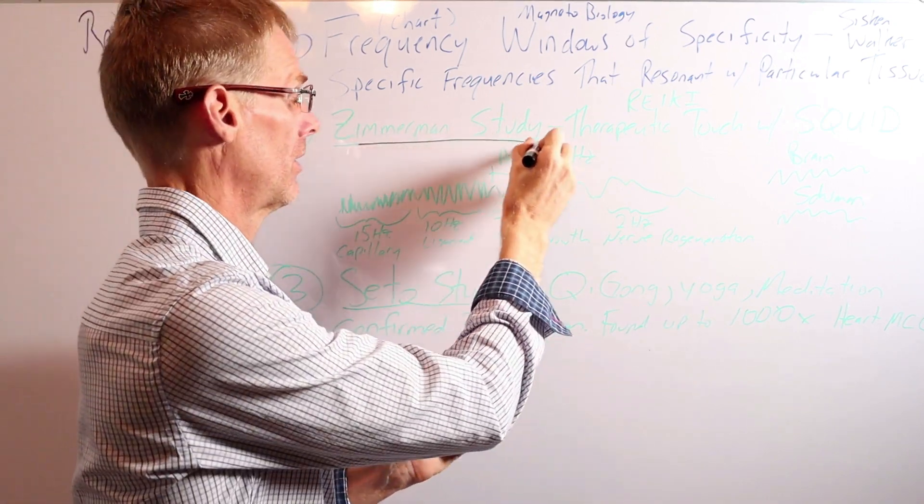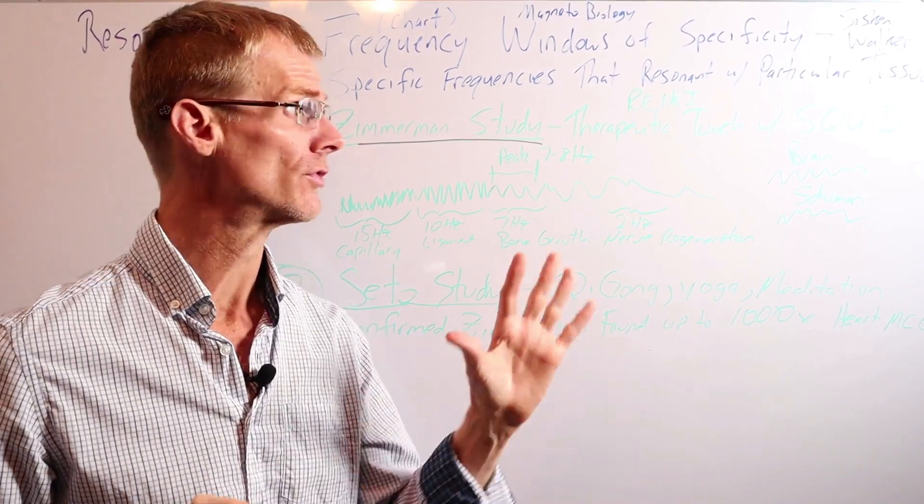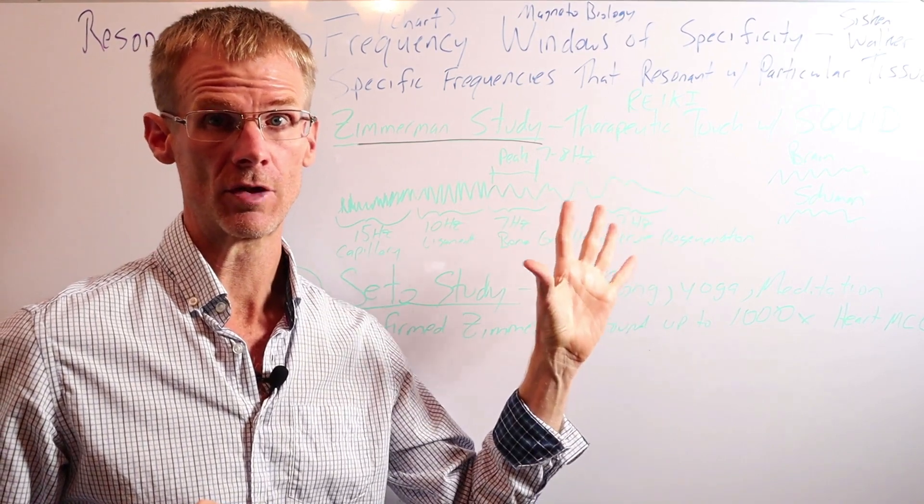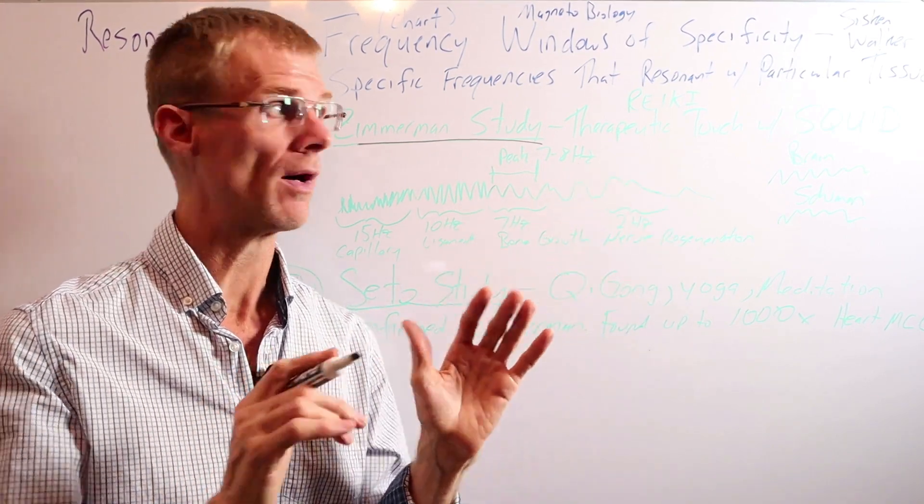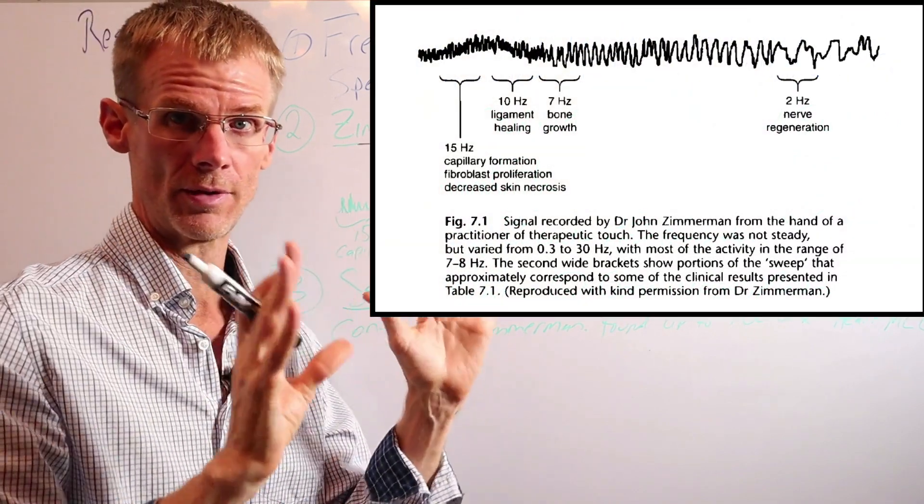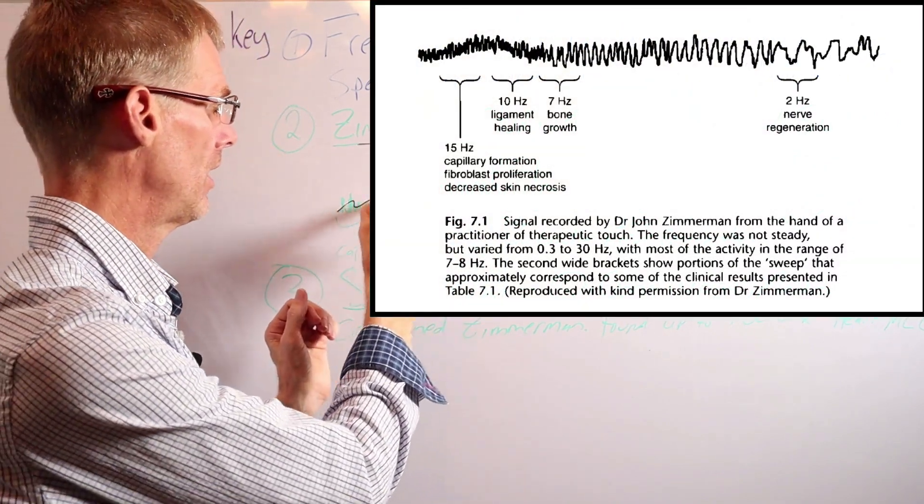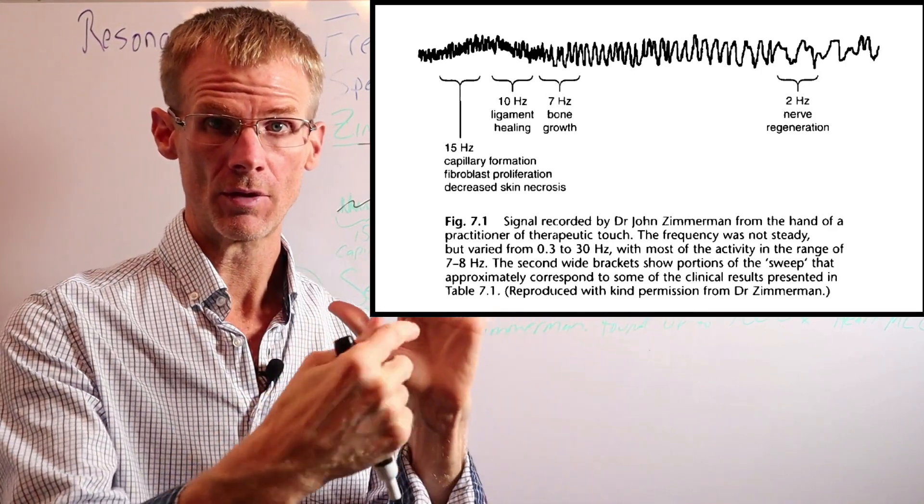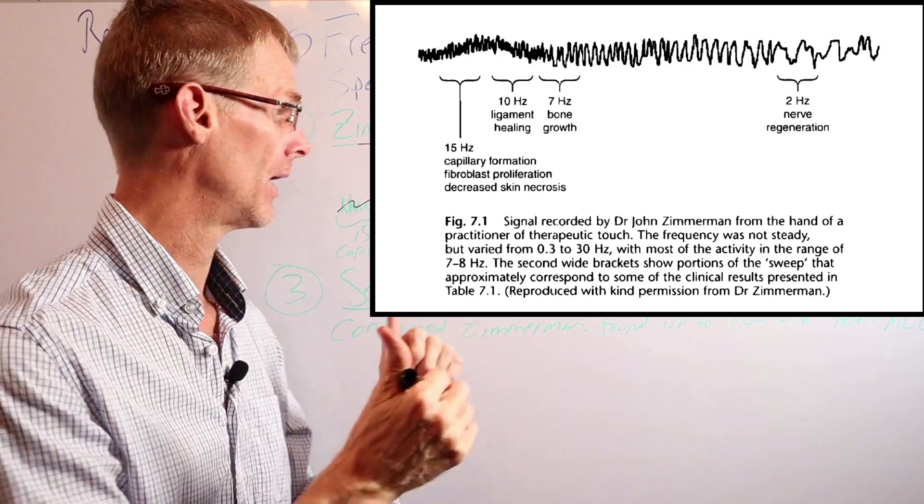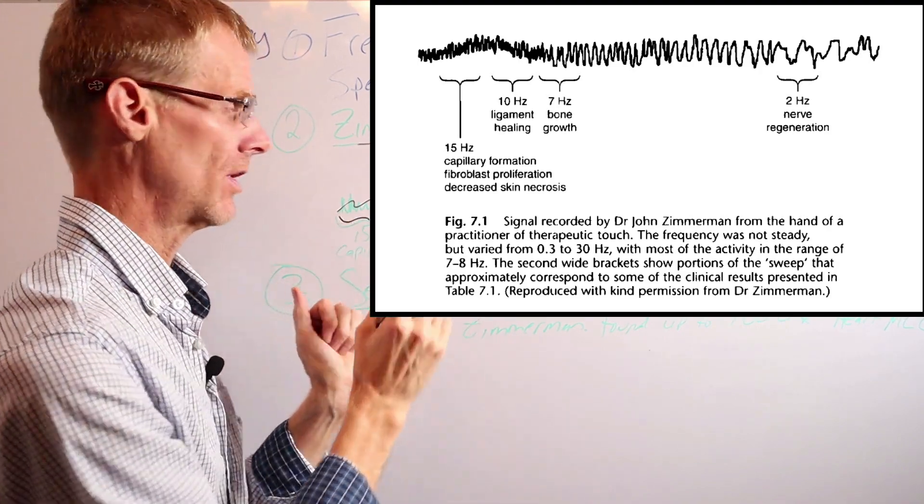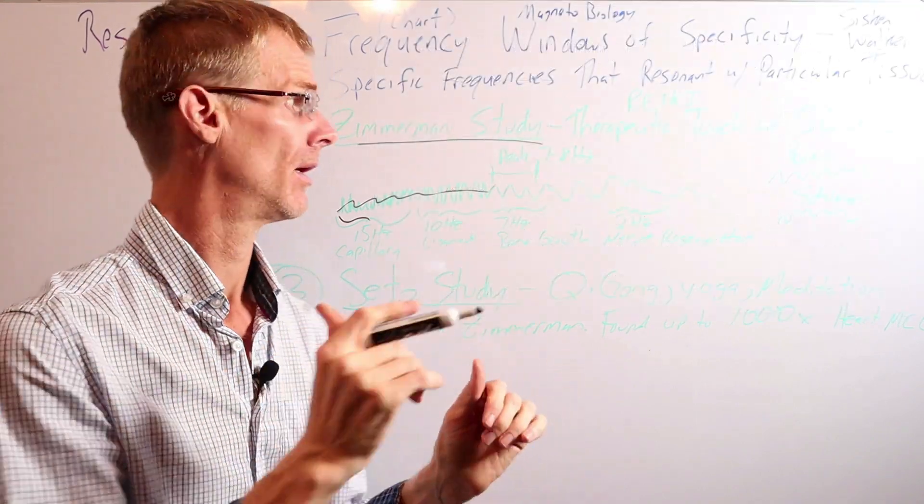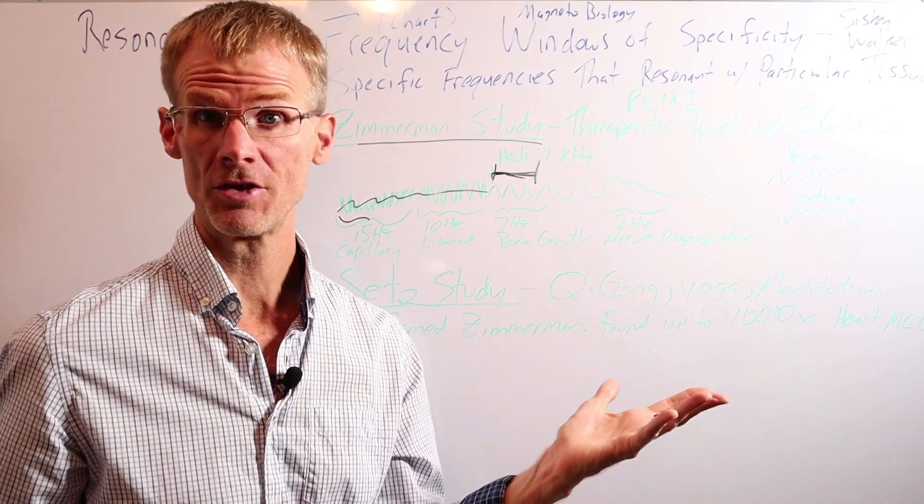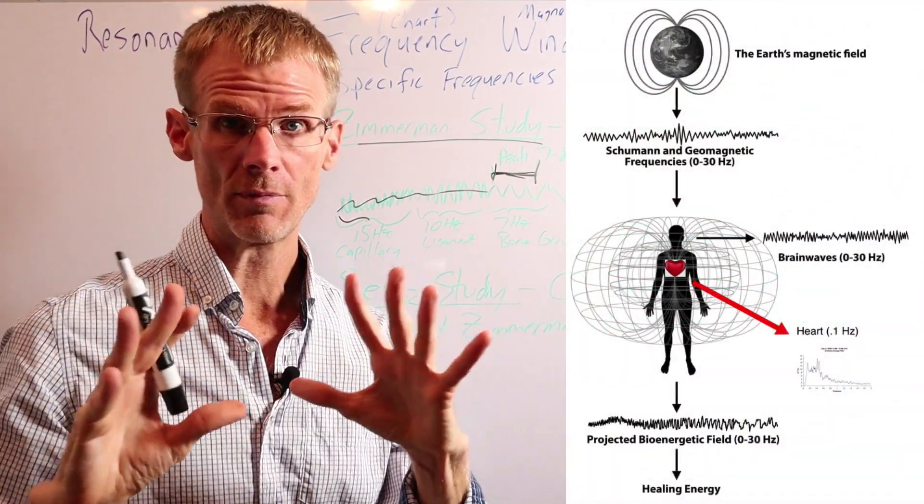So let's first look at the Zimmerman study. And Dr. James Zimmerman used therapeutic touch practitioners like Reiki healers, and again, used that very sensitive squid magnetometer. And what he found, and this is a very crude drawing here, I'm going to put a better drawing on the screen, is that the Reiki healers were kind of scanning a whole range of frequencies. So again, they were measuring the frequencies coming out of their hands. And it was very interesting that they were scanning between zero to 30 hertz mainly, but there was a peak at seven to eight hertz, which is right in the Schumann resonance.